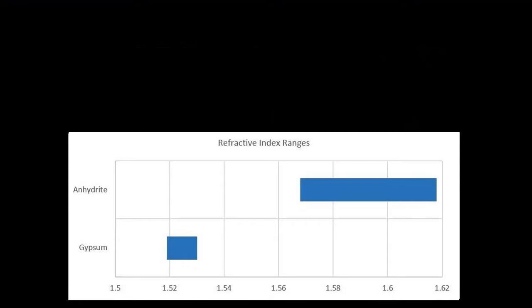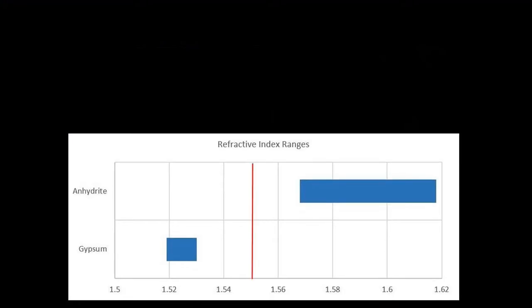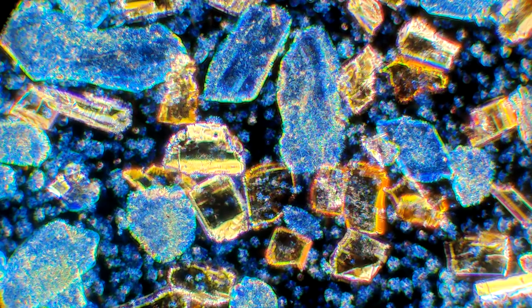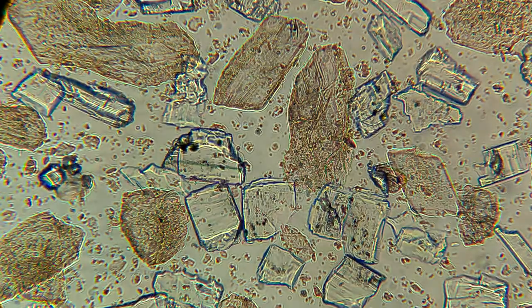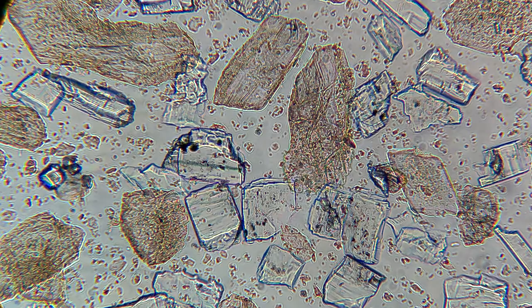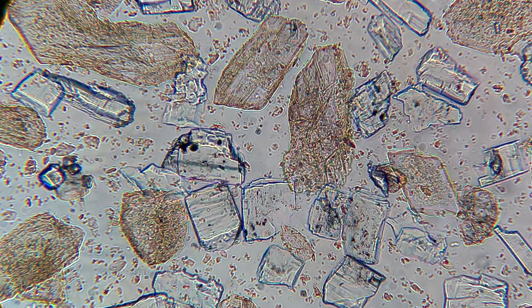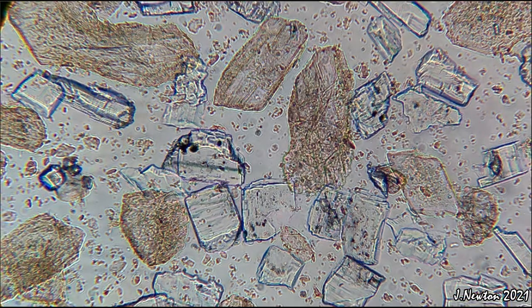Remember we talked about the separation between the two minerals' RIs? Here is where 1.55 liquid comes in handy for a quick separation of the two minerals. Gypsum's dispersion colors will shift towards the blue to blue-white wavelengths, while anhydrite's higher RIs will yield a shift to the yellows. Here you can see the dramatic change under central stop dispersion staining. Under plain polarized light, the gypsum appears grainy and tan in color, with the Becke lines flowing into the higher RI liquid, whereas anhydrite is transparent with distinct Becke lines flowing into the crystals.